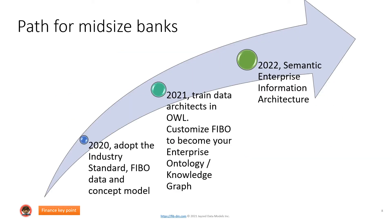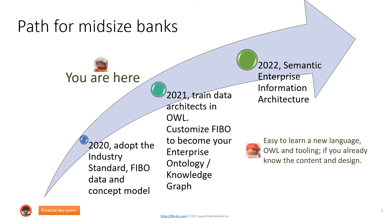This is the path for a mid-sized bank — the years are indicative. Suppose you are at the beginning of 2021: you already adopted the industry standard and you want to move on to SEIA. The proposition is that for the data architect, it's easy to learn a new language — OWL and the tooling — if you already know the content and design. For the ontologist, it's easy to build FIBO ontologies if you have 50M data models.